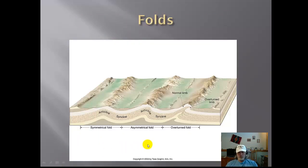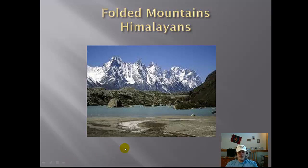One type of mountain building we briefly touched on was the Himalayas, and that is a fold. A fold involves convergent boundaries — in the case of the Himalayas — where the land has been folded or squeezed together, but there are no breaks in the land like in a fault. You get this nice rolling type of features. The terms anticline and syncline we'll look at more when we talk about historical geology. A good example is the Himalayan mountains, where the Indian plate smacked up underneath the Eurasian plate — a convergent collision boundary.